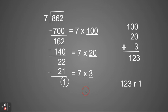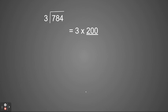Let's look at another example. In this problem, I have 784 divided by 3. Again, I'm going to look at the hundreds place. If I only did 3 times 100, that would work, but I would still have a lot left over. I could though do 3 times 200, and it would be 600, which is going to be a lot closer. So in this case, I'm going to do 3 times 200. 3 times 200 is 600. I'm going to take 600 away from 784 and I'll have 184 left.